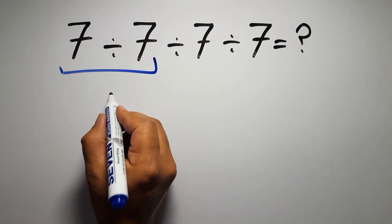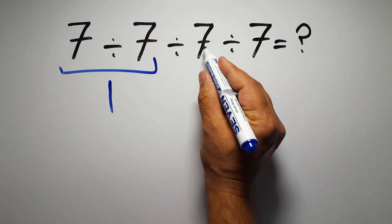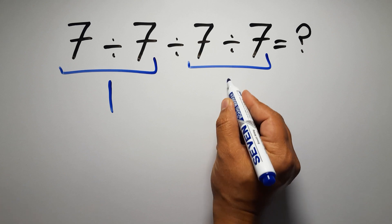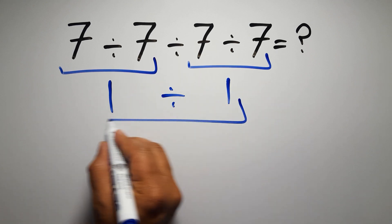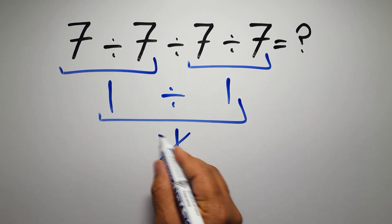7 divided by 7 gives us 1, and again here we have 7 divided by 7, so 1 divided by 1 is just 1. But this answer is not correct.